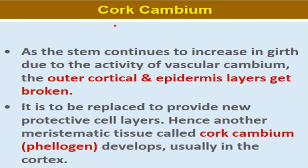Next is the activity of cork cambium. In secondary growth, we have done the activity of vascular cambium — the second important thing is cork cambium: how it is formed and how it is responsible for secondary growth. As the stem continues to increase in girth due to vascular cambium activity — forming secondary xylem and secondary phloem — the outer cortical and epidermis layers get broken.